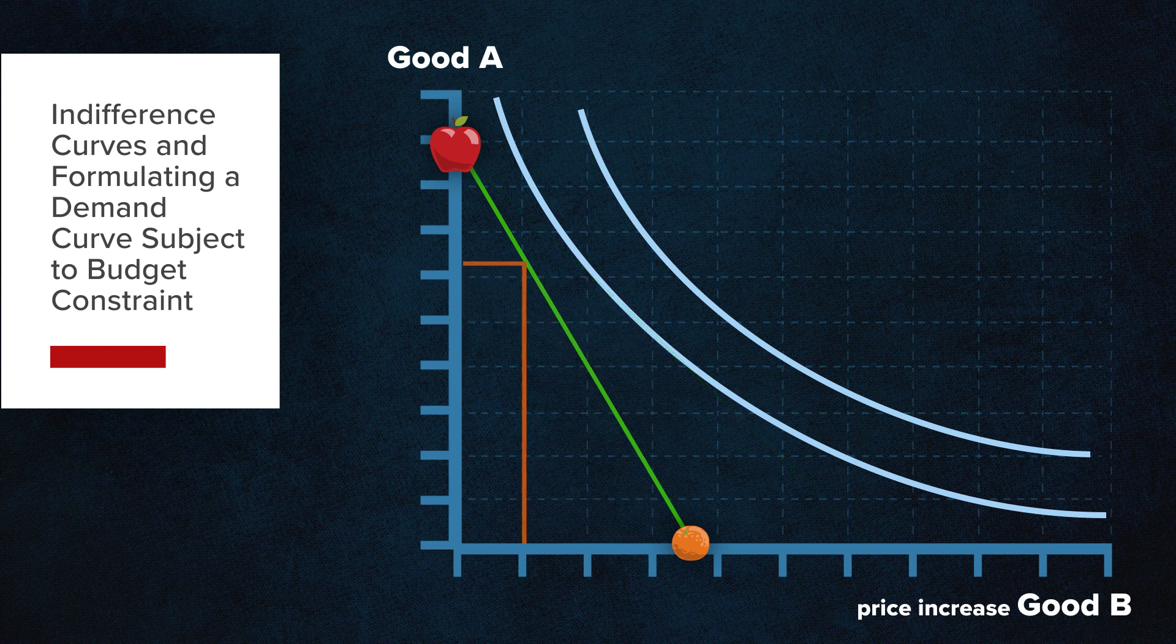The new budget constraint cuts the updated indifference curve to the left of the earlier line, displaying that the consumer will now purchase a higher amount of good A and fewer amounts of good B due to the change brought about by the shift in the budget constraint.